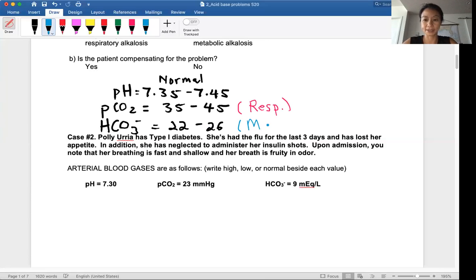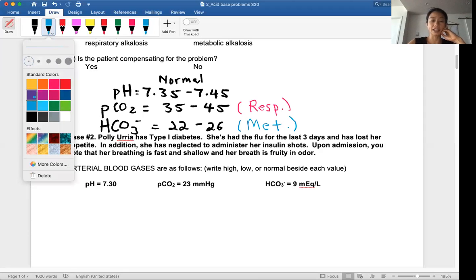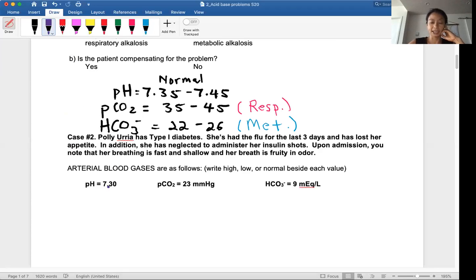Now you're going to look at each value. Here's a patient for case two on the worksheet showing up to the ER. You can read the patient's background, but a lot of times these patients with acid-base imbalance are incoherent, maybe unconscious, so really the blood work will be the way to go to analyze the values.